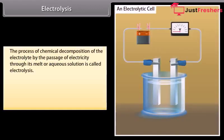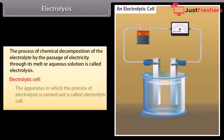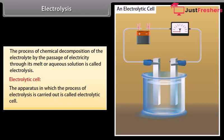Electrolysis. The process of chemical decomposition of the electrolyte by the passage of electricity through its melt or aqueous solution is called electrolysis. Electrolytic cell: The apparatus in which the process of electrolysis is carried out is called electrolytic cell.